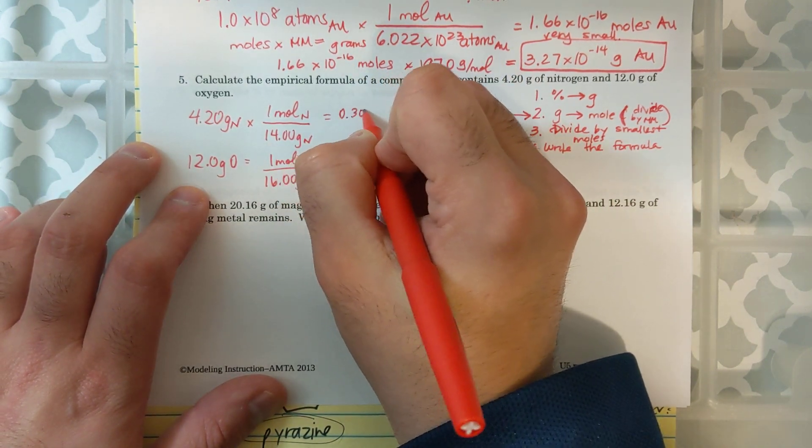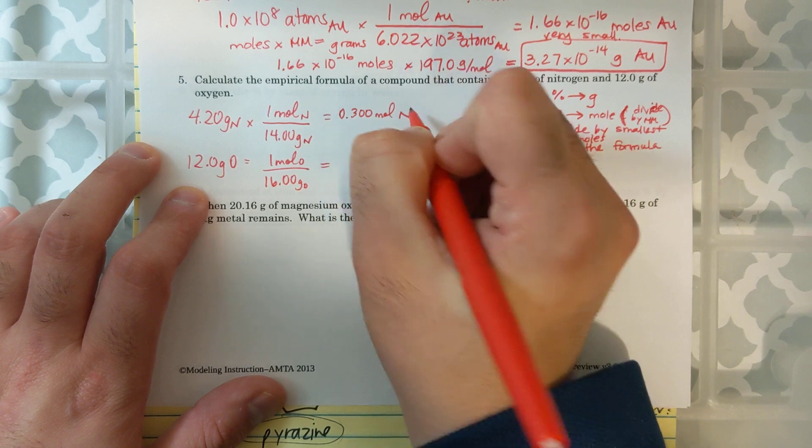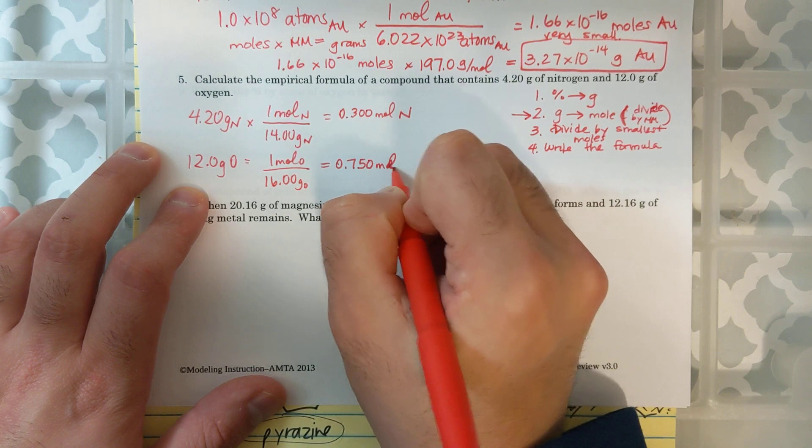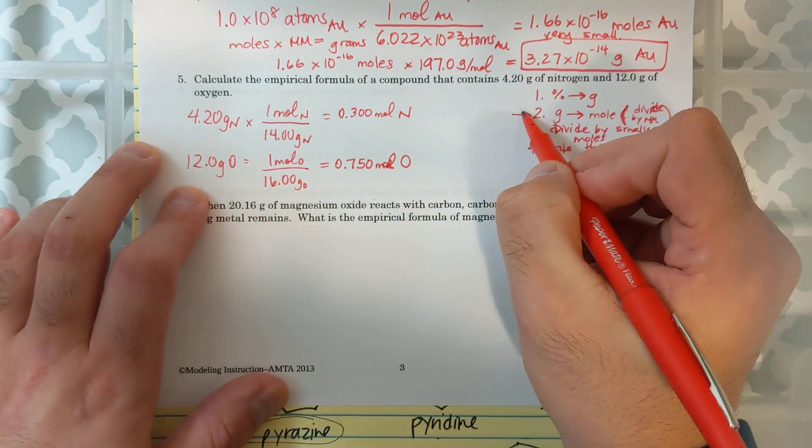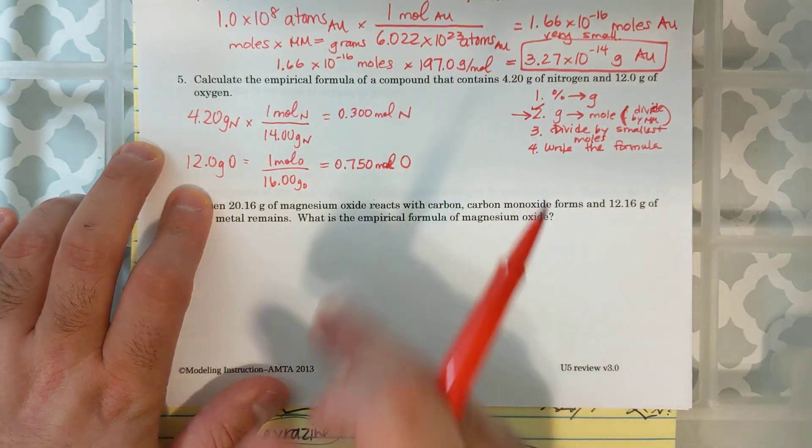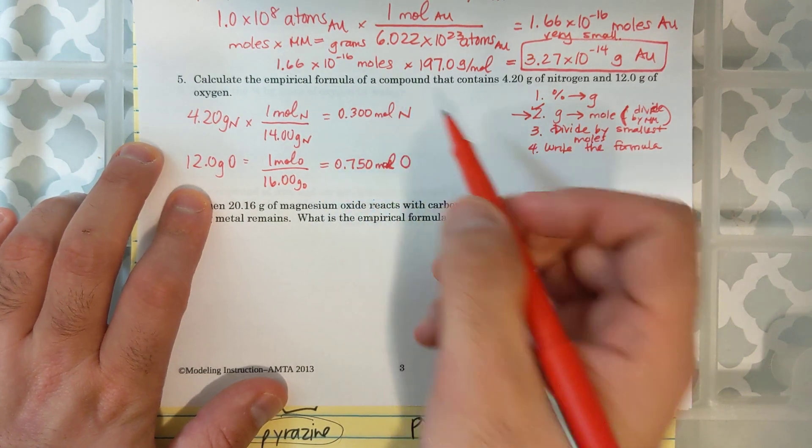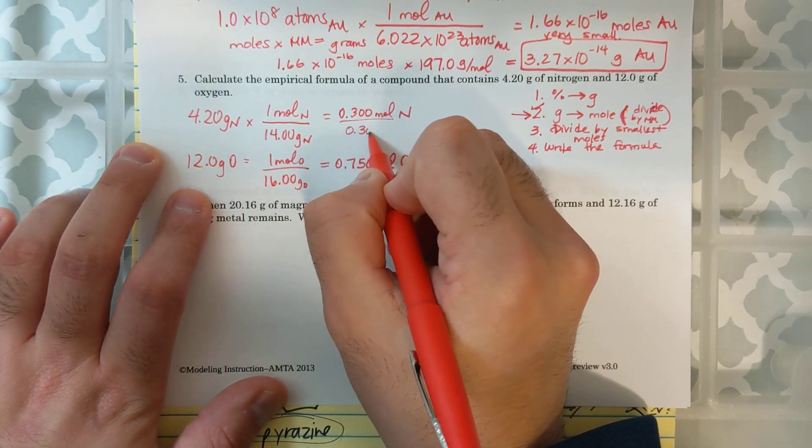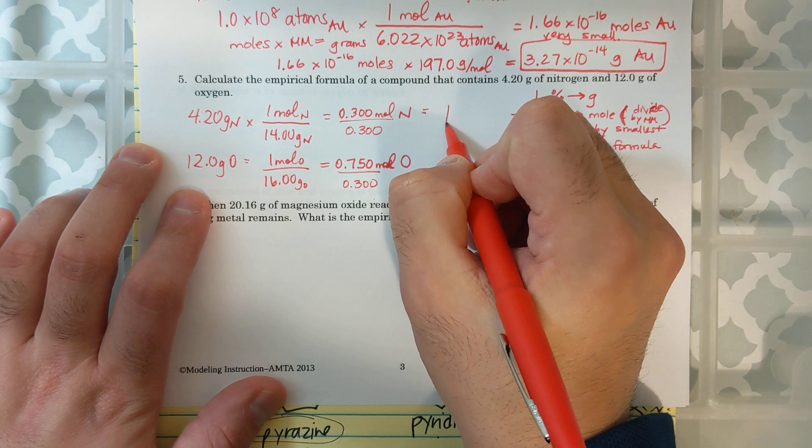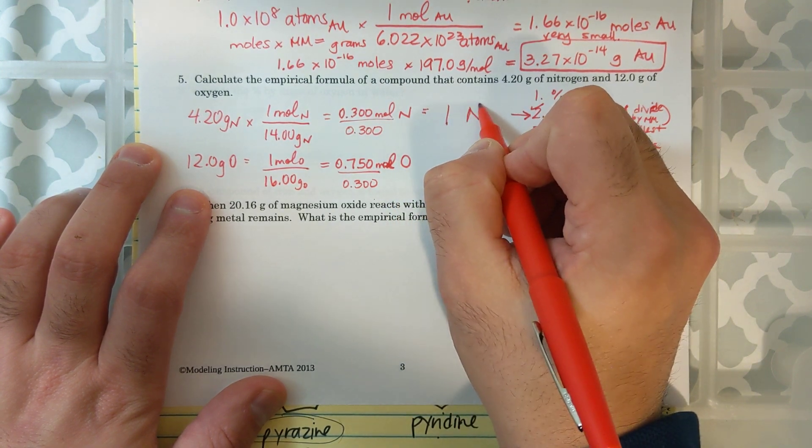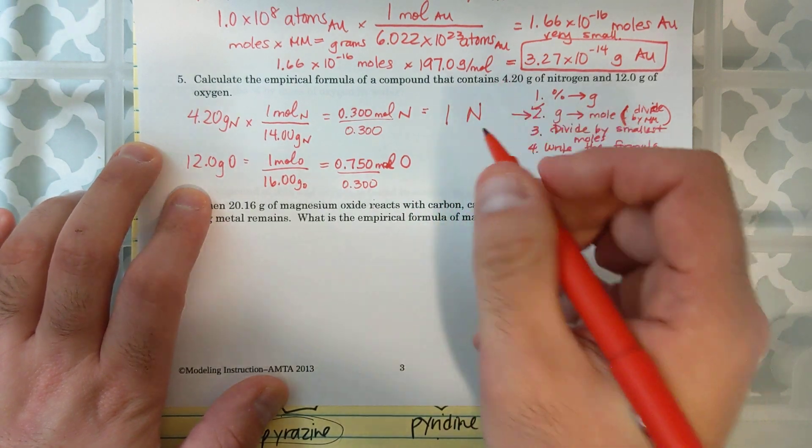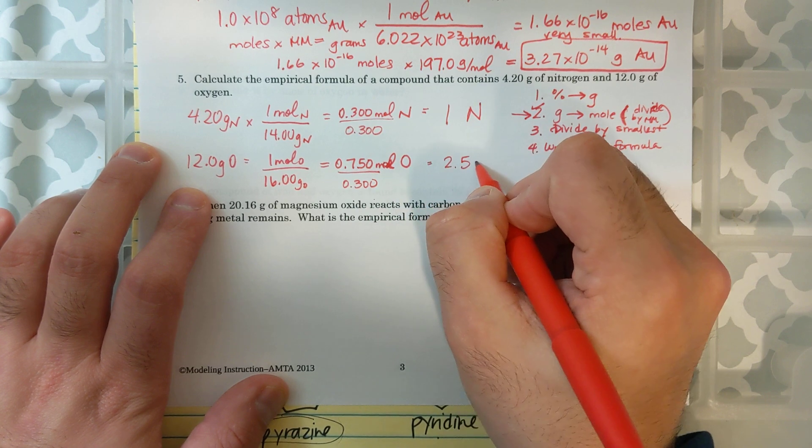And so I get 0.300 moles of nitrogen and I get 0.750 moles of oxygen. And so we just completed step 2. And now we have to do step 3, which is dividing by the smallest moles. Now between these two, my smallest is 0.3. So I'm going to divide both of them by 0.3. And I get 1N and I get 2.50.